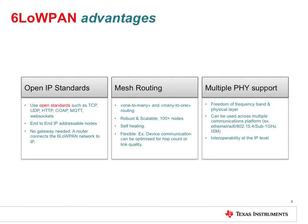Secondly, mesh routing enables networks to become more robust with large size because more nodes can talk to one another. The network is self-healing and performance can be optimized for either hop count or link quality. If a transmission path between two nodes is broken, a new path will automatically form.